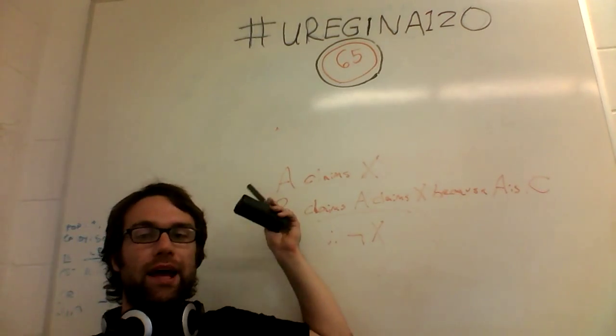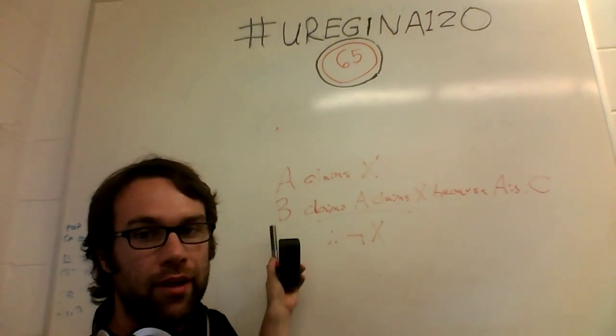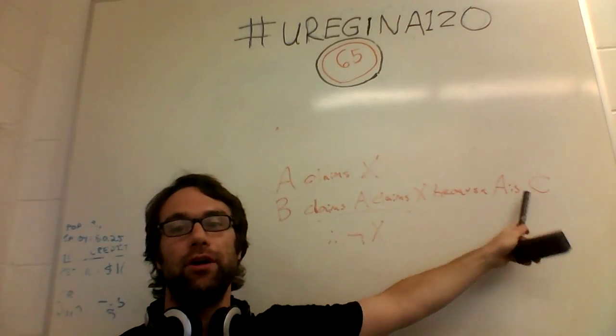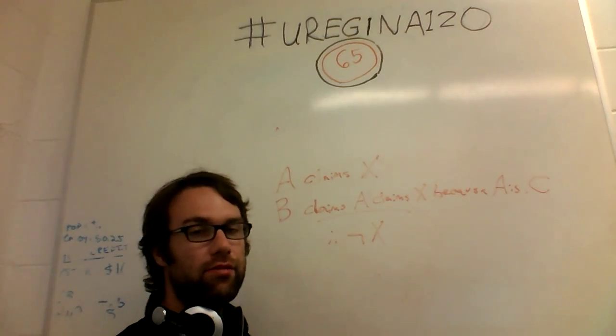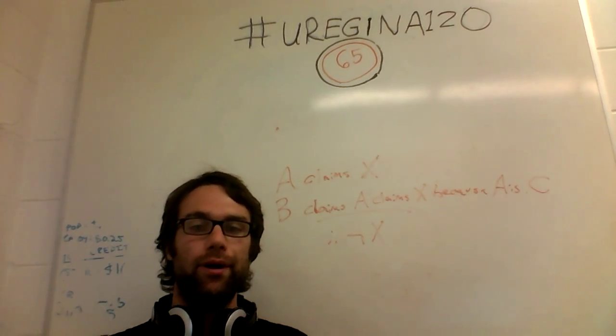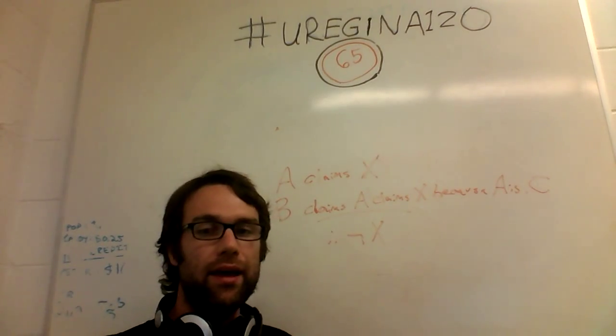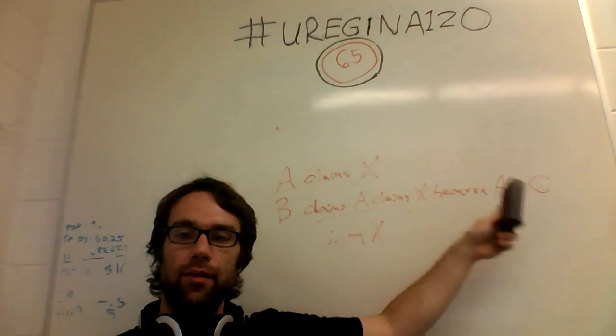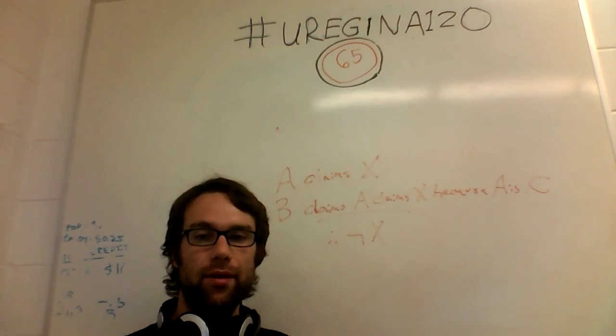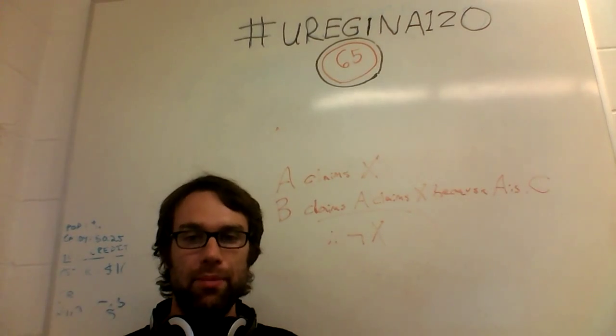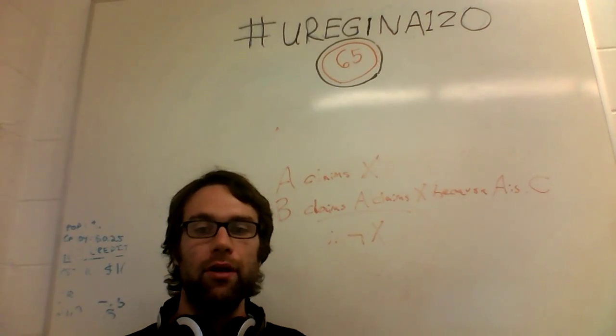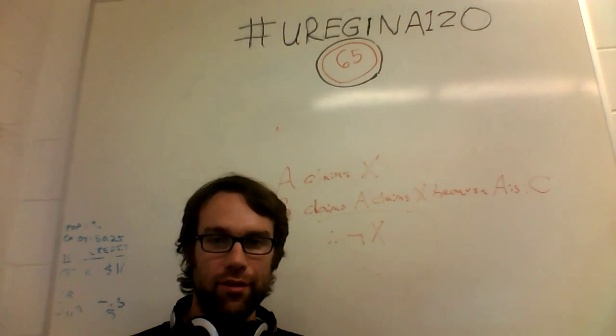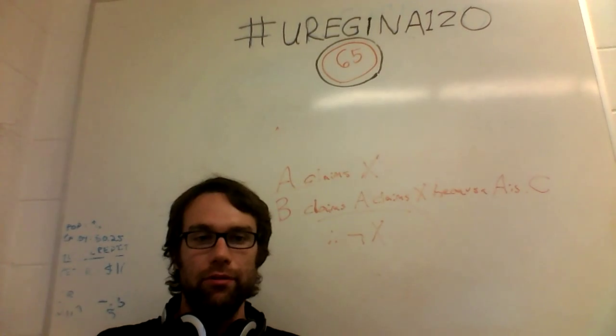Person A claims X something, person B claims that A claims X because A is some undesirable thing. So again, you're basically making a claim that the truth of this depends on the person and depends on the person's nature, depends on kind of who they are. Now there may be some instances where this is possible, but a lot of the time it's not, and it's worth keeping an eye out for when this happens.